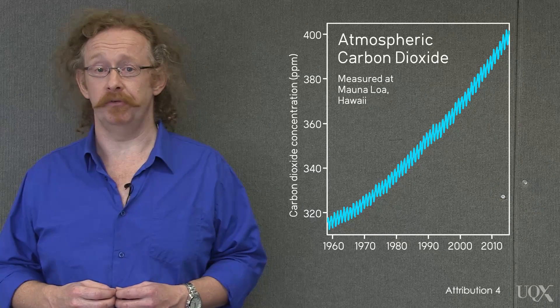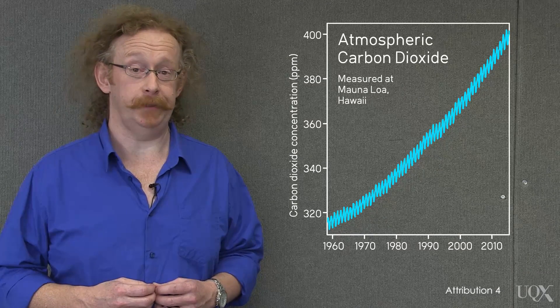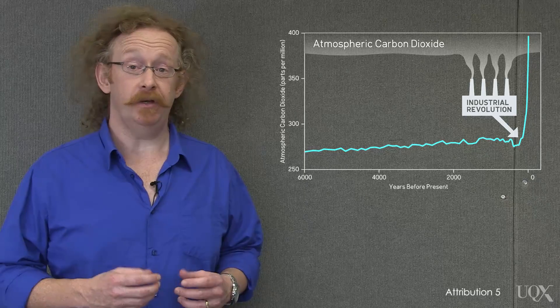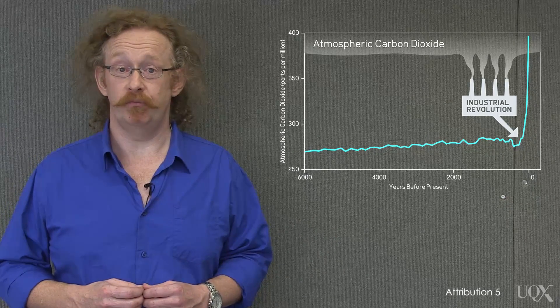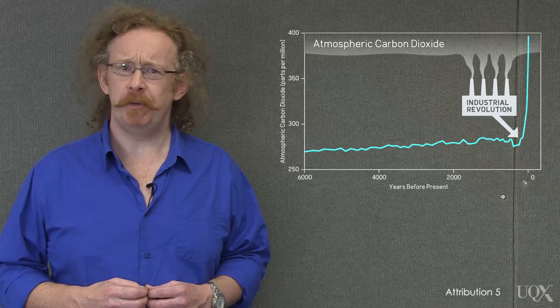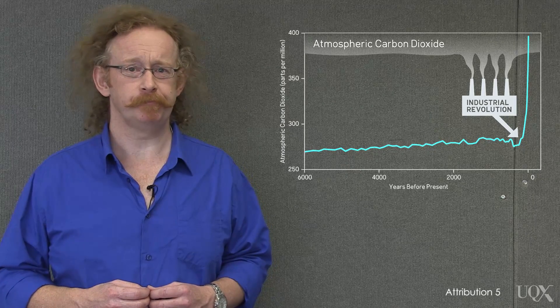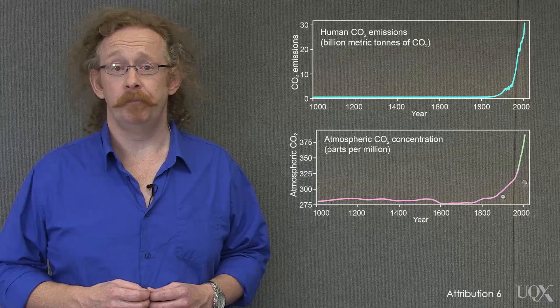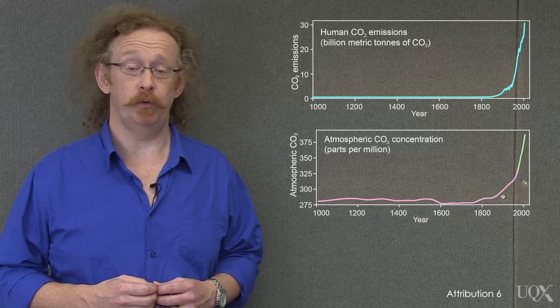Scientists became more aware of this after 1958, when accurate measurements of CO2 concentrations were first made at the Mauna Loa Observatory in Hawaii. Together with the ice core record, we see that atmospheric CO2 began to rapidly grow soon after the start of the Industrial Revolution. It would be a bit of a coincidence if this were a natural phenomenon. Furthermore, the increase in atmospheric CO2 has closely tracked the amount of CO2 that we've been releasing.